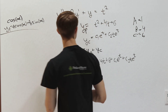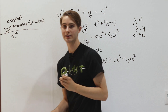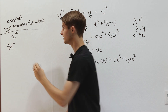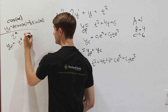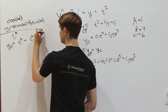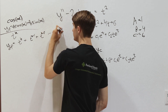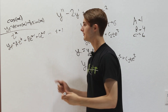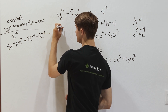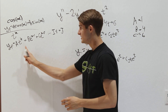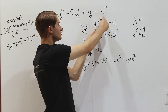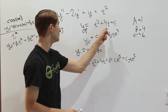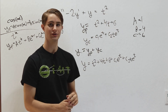For t to the power of k, where k is a positive integer, the particular solution guess is at^k plus bt^(k-1) plus ct^(k-2), all the way down to a constant term, each with its own coefficient. The t^k term accounts for the t^k on the right side, and the lower-degree terms cancel out anything extra that appears in the derivatives.